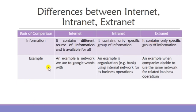Now let us look at examples. An example of internet is the network we use to Google, visit social media, and other things. For intranet, an example is an organization that uses an internal network for its business operations — for example, a bank can use an internal network to store all transactions. For extranet, an example is when companies use a shared network for related business operations, such as the FBI, CIA, and Department of Defense coming together to form a network for a specific operation.